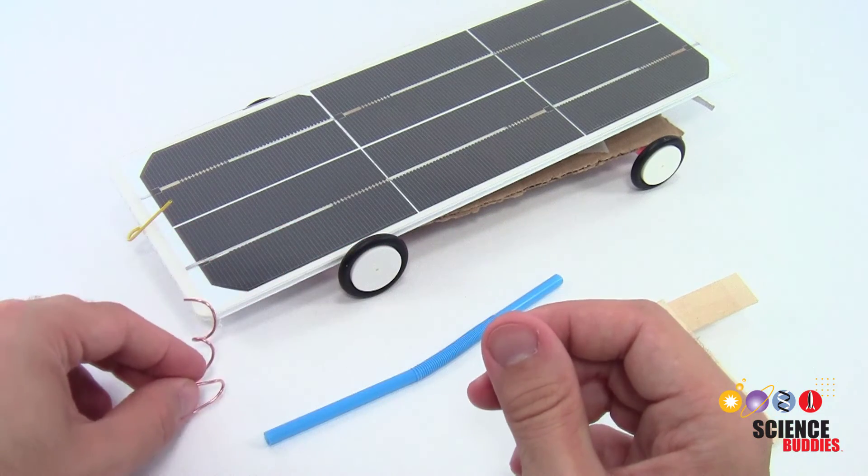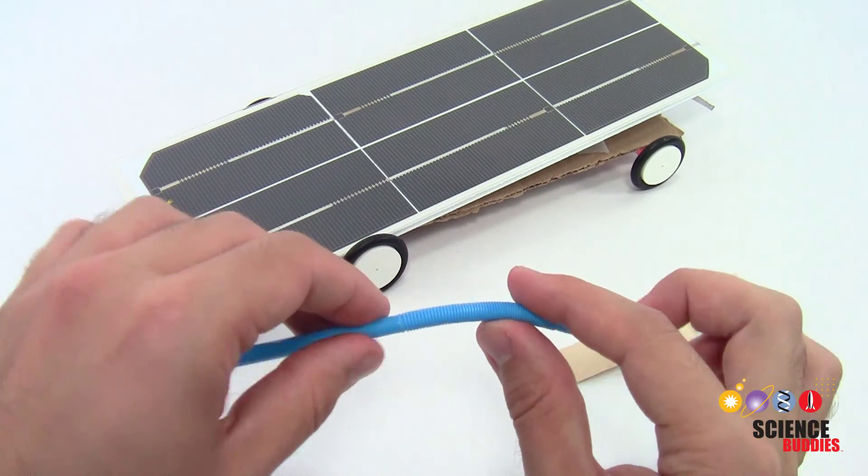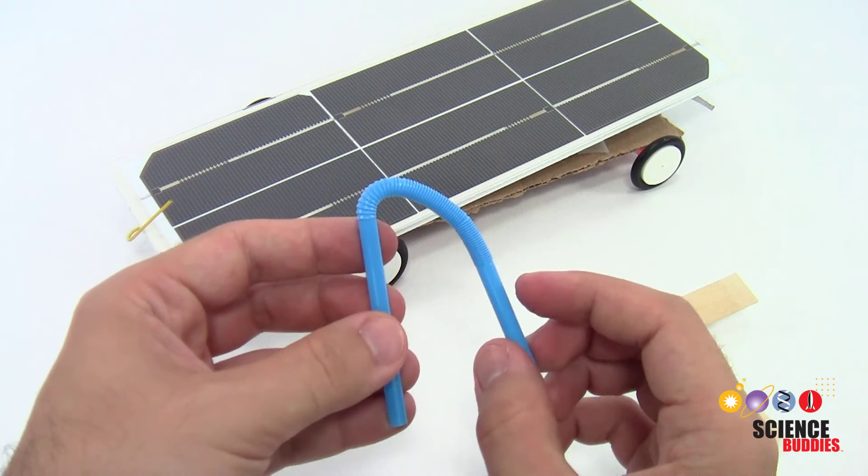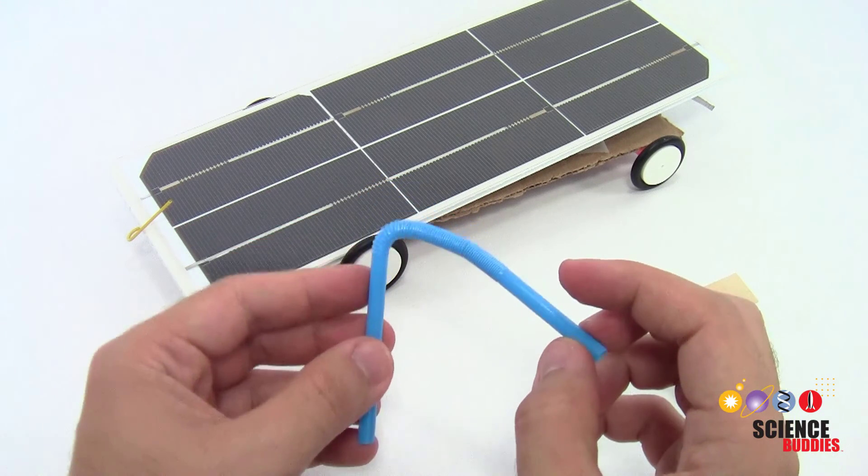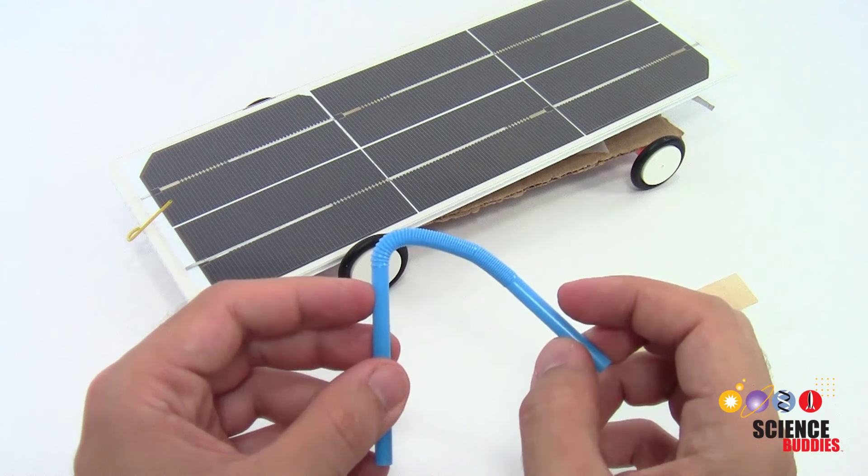You can experiment with other flexible materials, like bendy drinking straws, but be careful not to use something that is too flexible or it might not support the weight of your panel or the panel might bounce around when your car moves.